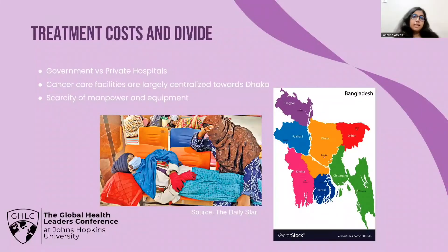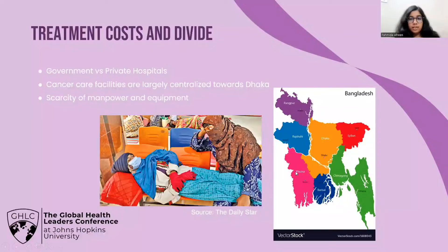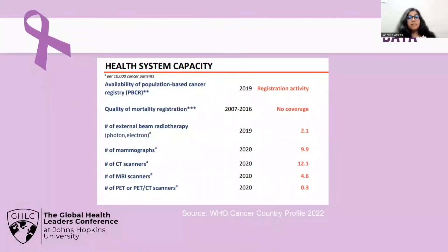Another problem is that cancer care facilities in Bangladesh are largely centralized toward the capital Dhaka, shown here in orange on the map. Out of the 14 medical colleges in Bangladesh that have oncology units, five are in Dhaka alone and the remaining nine are spread across the rest of the country. With around 165 million people in Bangladesh, 22 million live in Dhaka and the rest are in other parts of the country. The number of CT scanners per 10,000 cancer patients is only 12.1, MRI scanners 4.6, and PET CT scanners just 0.3.